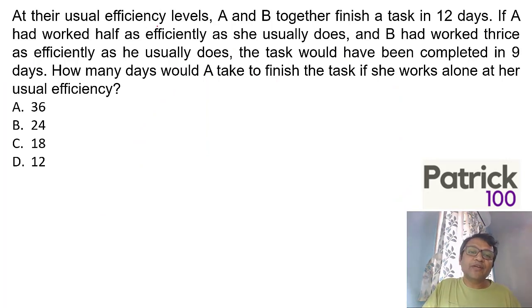At the usual efficiency levels, A and B together finish the task in 12 days. We want how many days A takes to finish the task. It has to be more than 12, because together they finish in 12. So B option ruled off. A had worked half as efficiently and B had worked thrice as efficiently, the task would have been completed in 9 days.